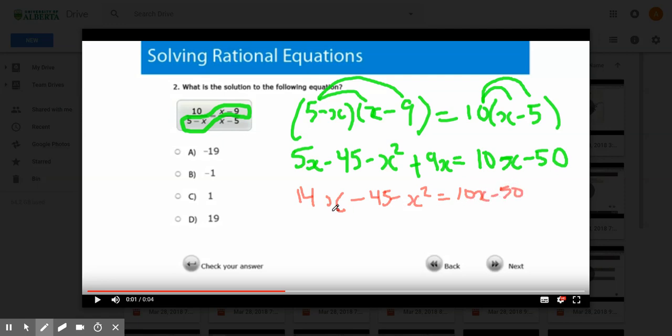Now I'm going to subtract 14x from both sides. You're going to get minus 45 minus x squared equals 10x minus 14x, which is minus 4x minus 50.